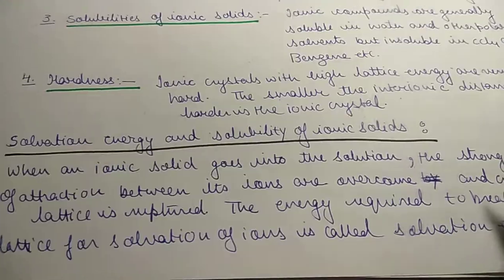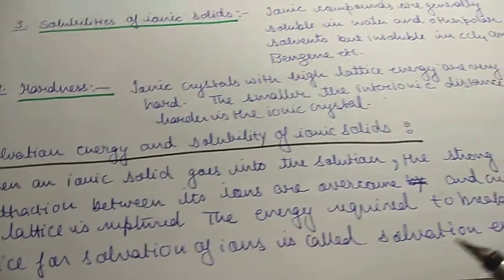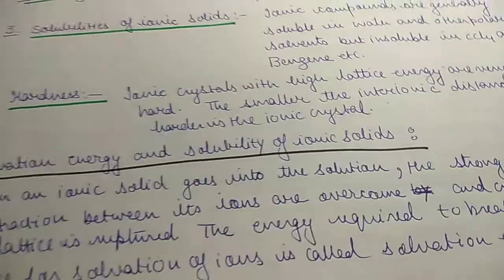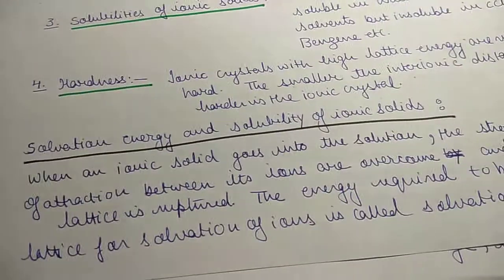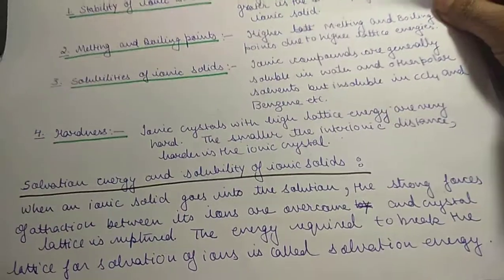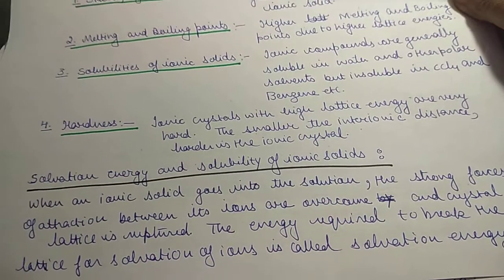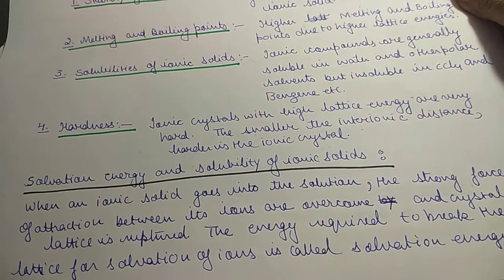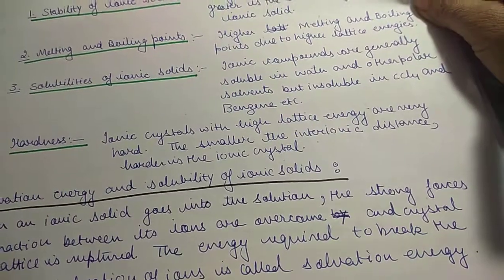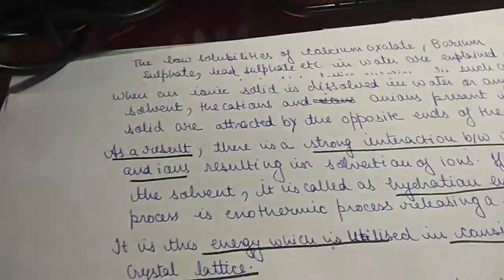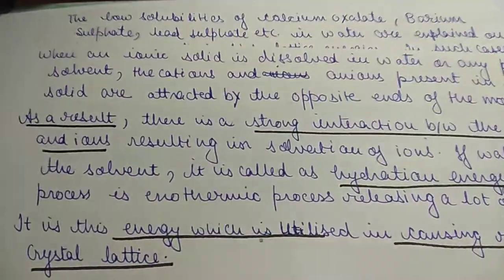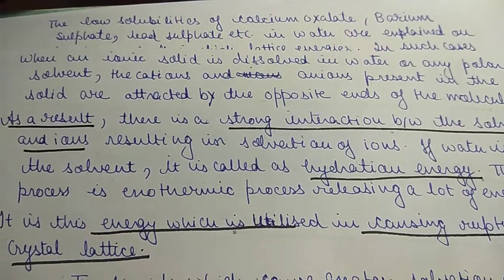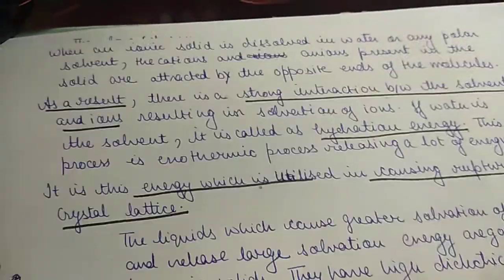When the crystal lattice is ruptured and the solid dissolves in a solvent, the energy required to break the lattice for solvation of ions is called solvation energy. We will now study how this process happens.